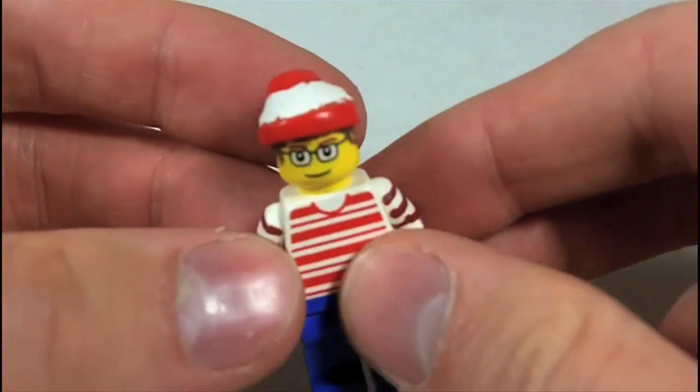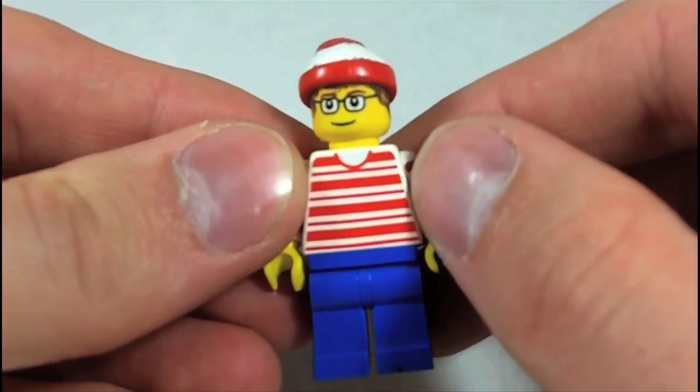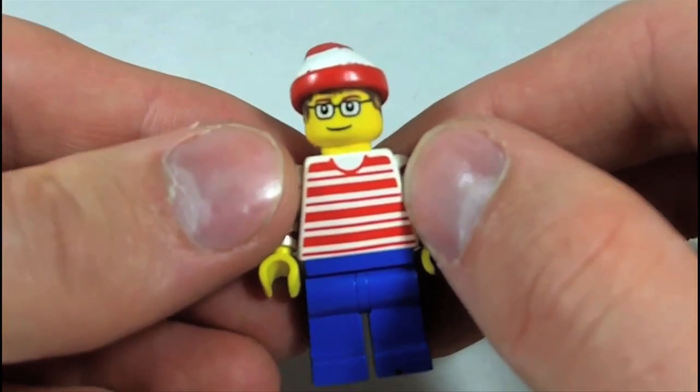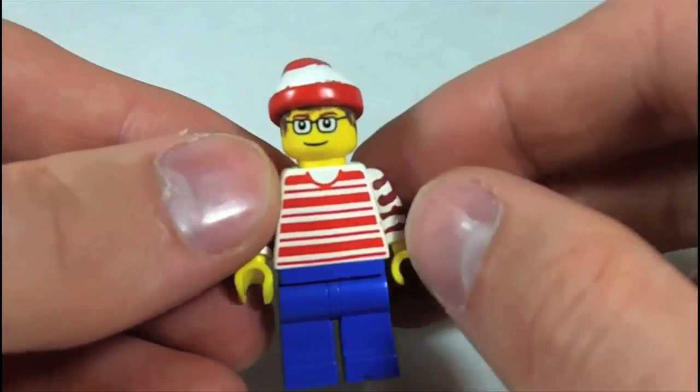Blue pants. This shirt is an old town shirt that's stripey and red, which is perfect for Where's Waldo. Link in the description to it on BrickLink.